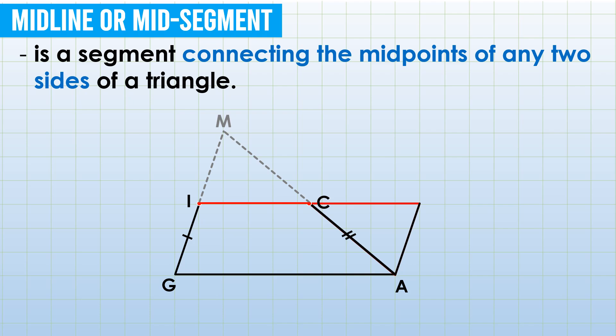So, what are our observations? First, if a triangle is cut along its midline or mid-segment, that triangle can be transformed into a parallelogram. Second, the midline IC is parallel to the third side of the triangle. Third, the midline IC is one-half the measure of the third side of the triangle.